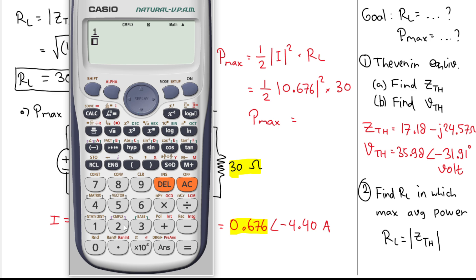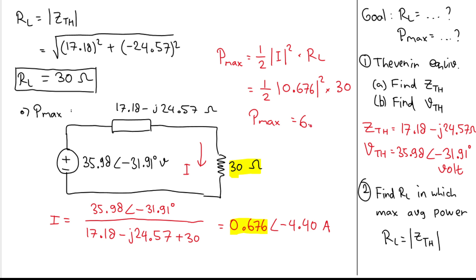Calculating (1/2) × 0.676² × 30 gives Pmax = 6.85 W. So the final answers are: RL = 30 Ω and Pmax = 6.85 W. Hopefully I did not make any mistakes in my calculation — thank you for watching, see you in the next video!